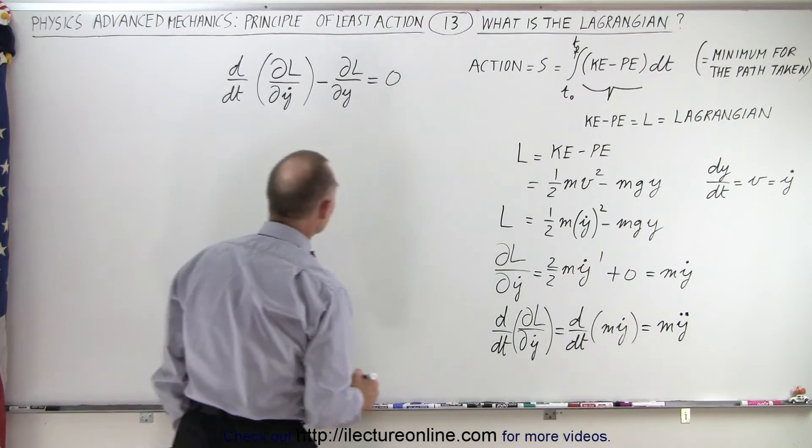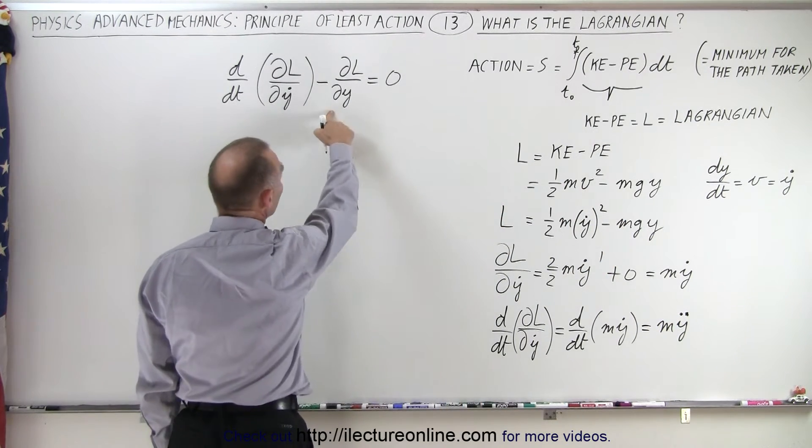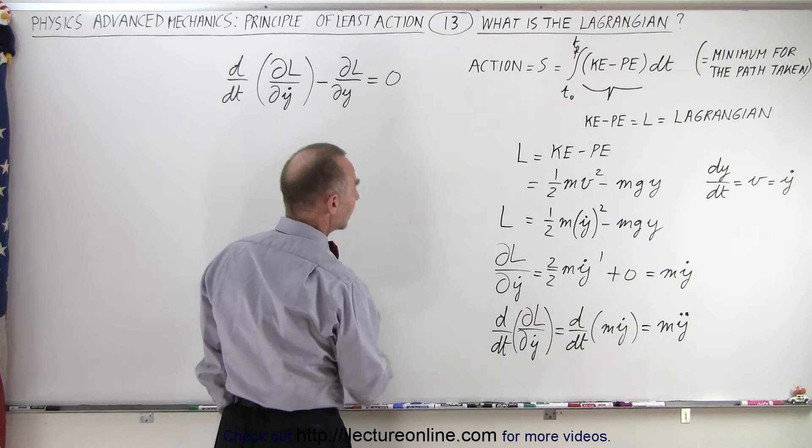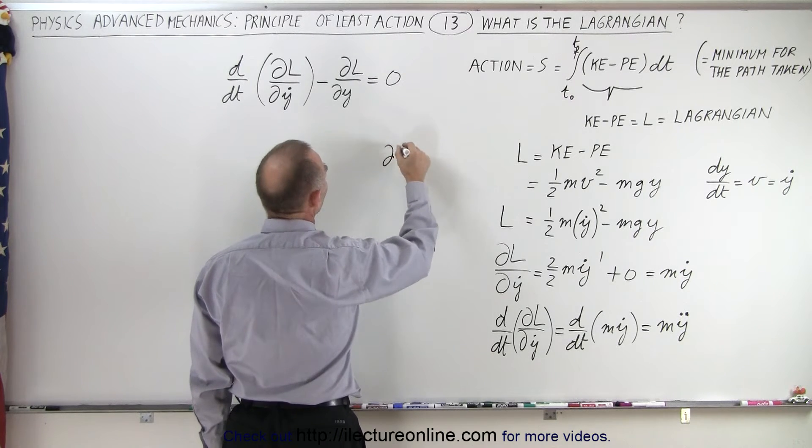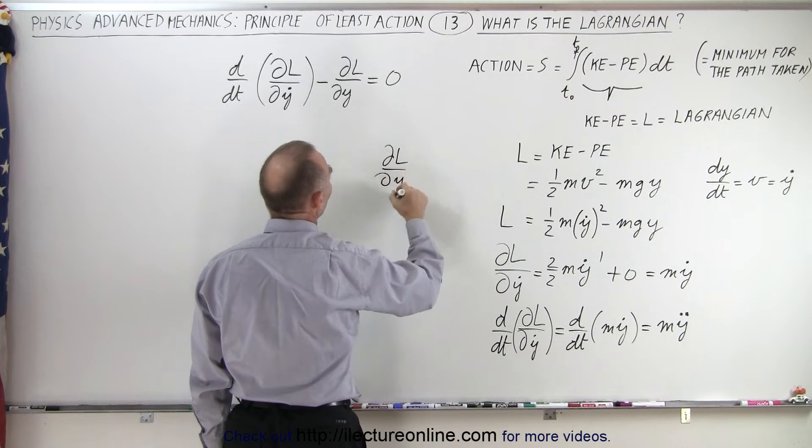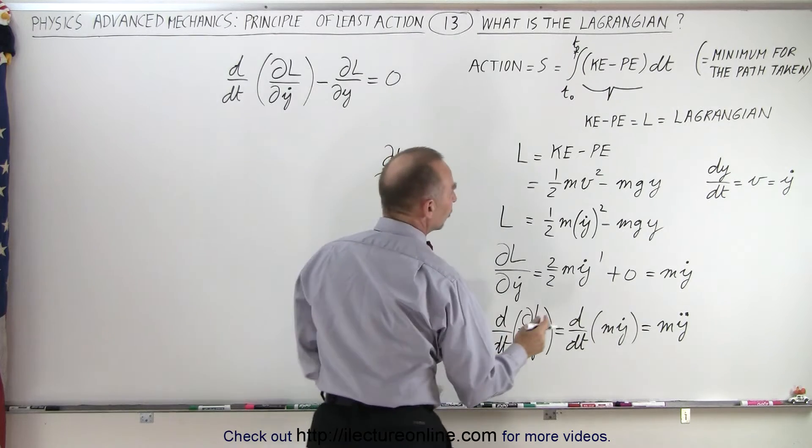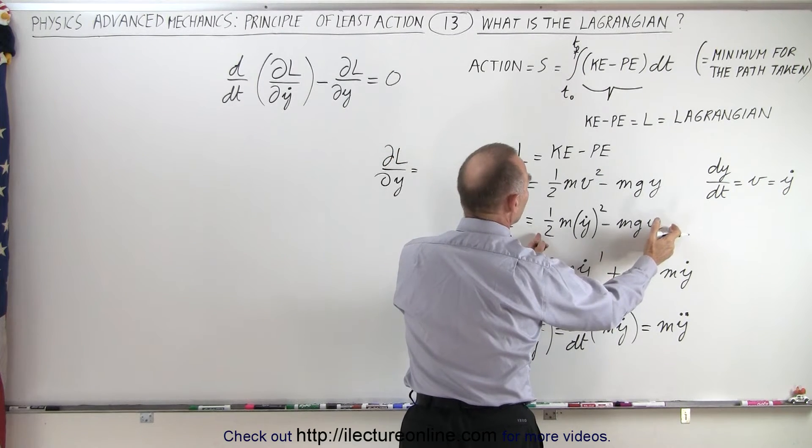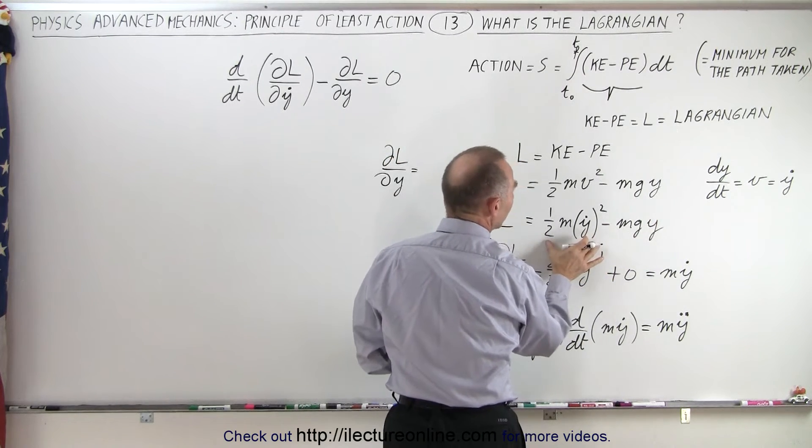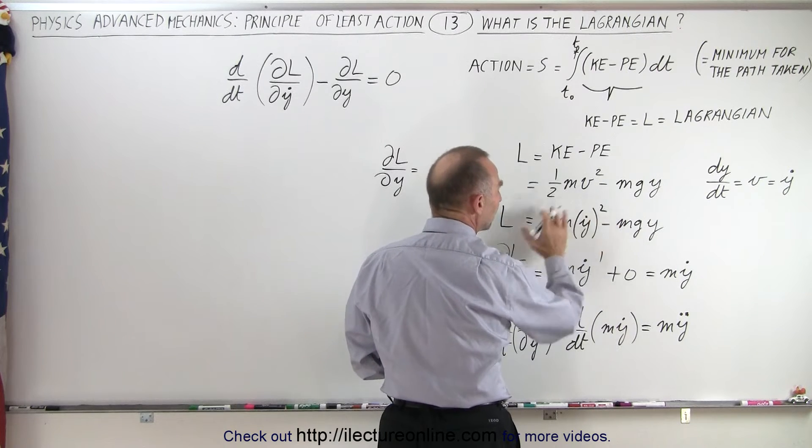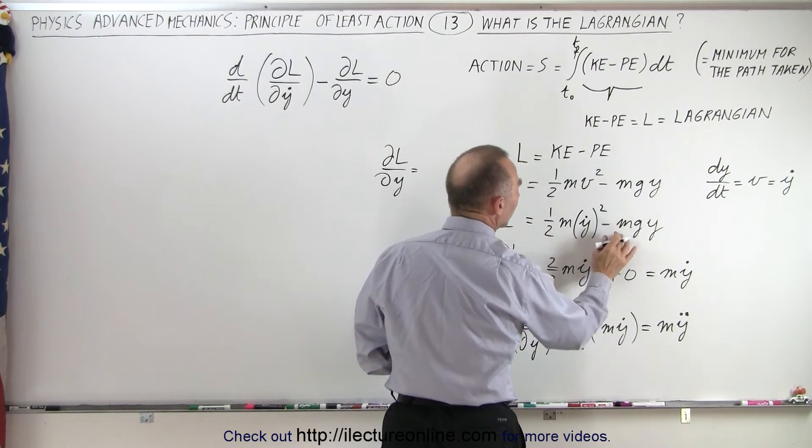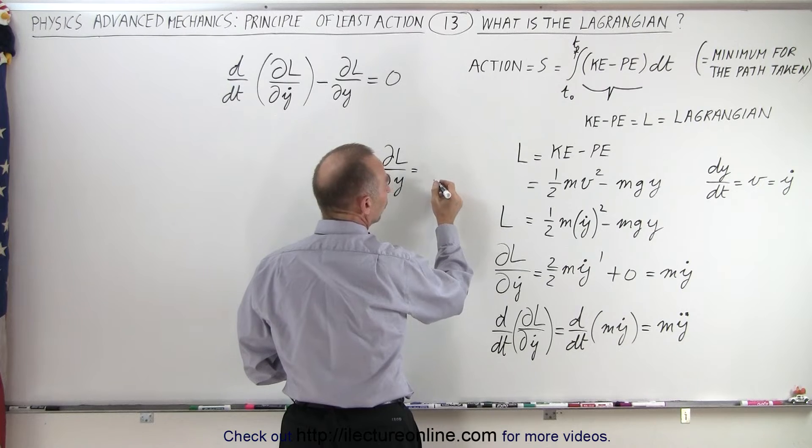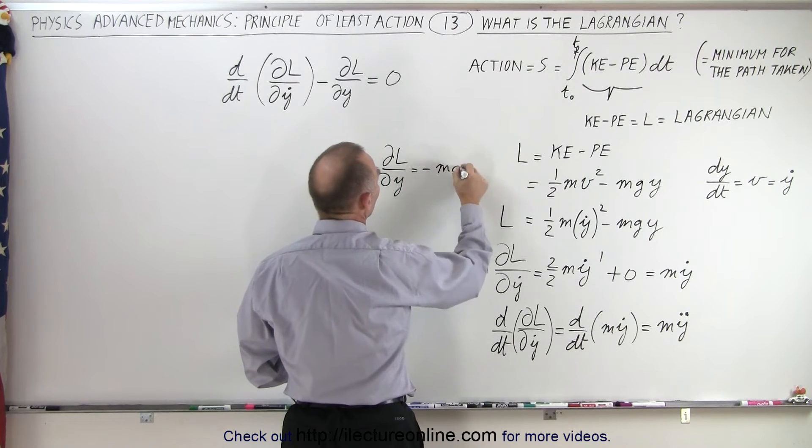Alright, now let's go to this portion right here. Let's now take the partial of L with respect to y, which is equal to the partial of this with respect to y, and now notice that this will go to zero because there's no y component in here. We simply get the derivative of this, so that would be equal to minus mg.